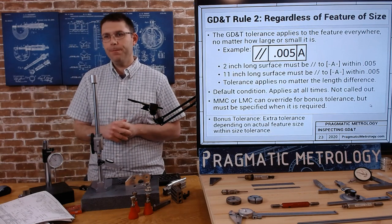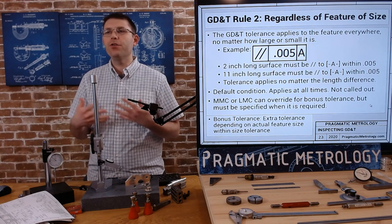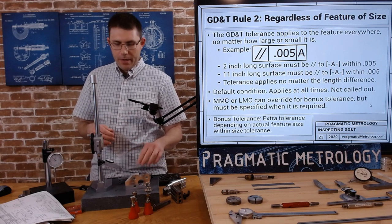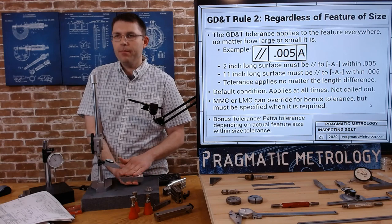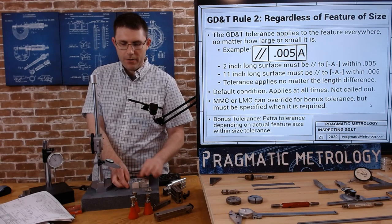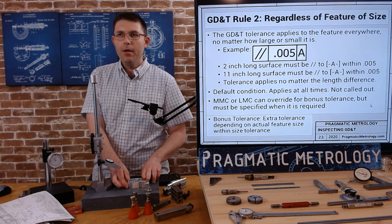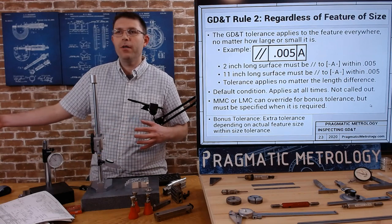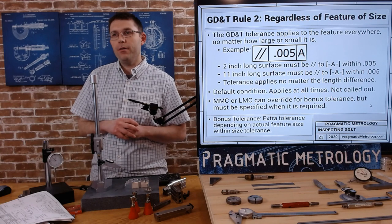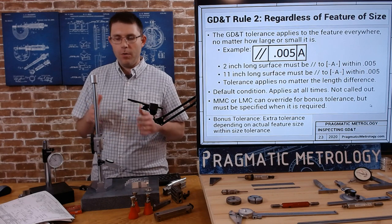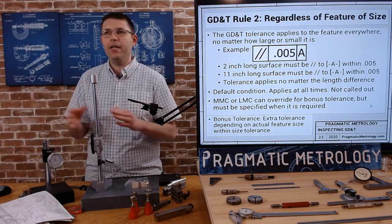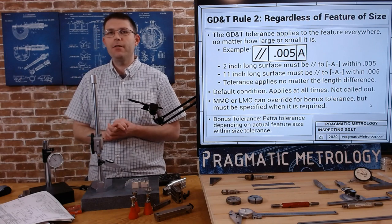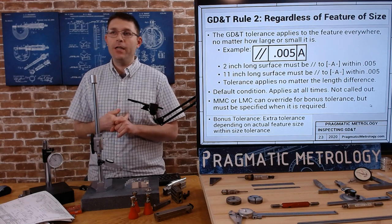Next up we have rule number two, which is regardless of feature size. What this says is that the GD&T tolerance applies to the feature everywhere, no matter how big or how small the part is. For example, we have parallel 0.005 to A. If we remember from our angle block print, datum A is this surface. If we were going to do a parallelism check to the top surface, we would have 5 thousandths of tolerance. But if the part grows, same design just scaled up, and they don't change the tolerance, we still only have 5 thousandths no matter how much bigger the part got unless somebody changed the tolerance in the software.